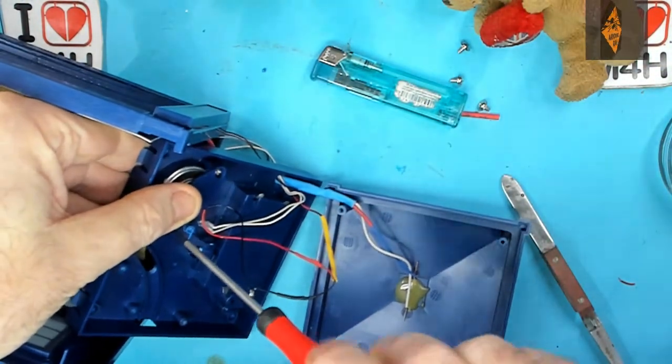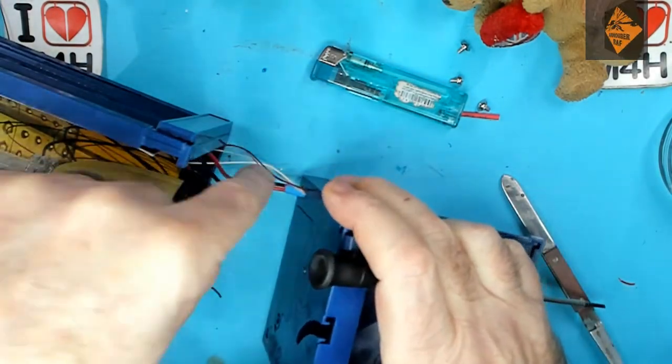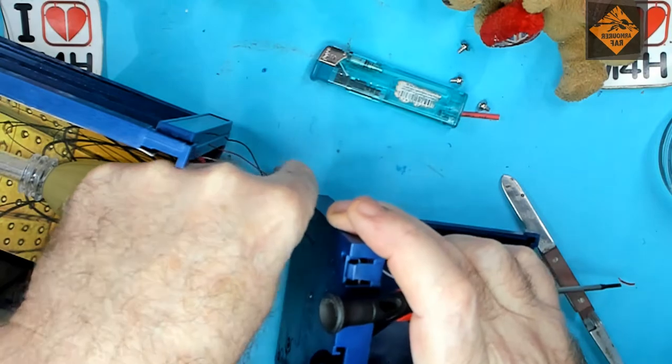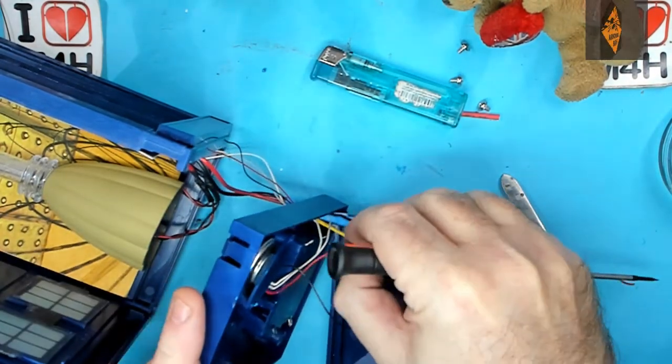So there we have the speaker wired up and screwed into place in the room. Next, we need to sort the rest of the wiring out and get it all threaded through and tidied up at the bottom end. So here we go with that.